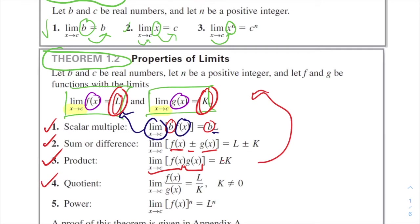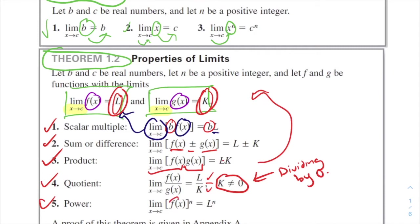The quotient rule covers division: the limit as x approaches c of f(x)/g(x) equals L/K, but only when K is not equal to zero, since dividing by zero would be undefined. The power rule states the limit as x approaches c of f(x) to the n equals L to the n — the exponent stays while we evaluate the limit of the inside function.